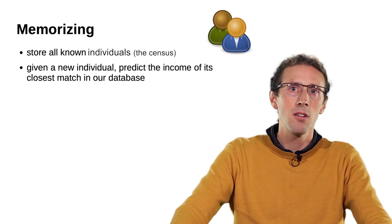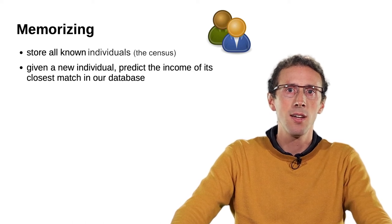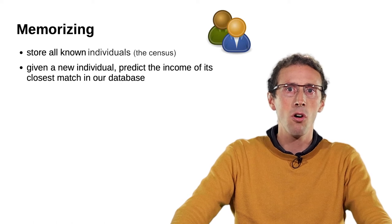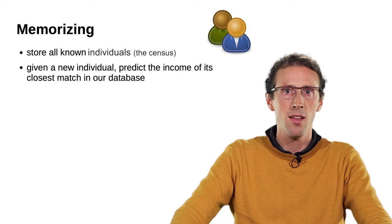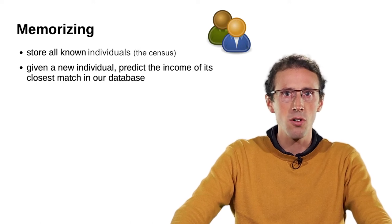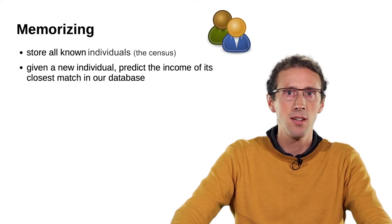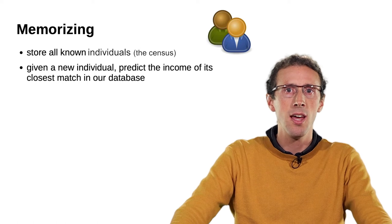One possibility for prediction is to memorize the whole available data. Given the problem of predicting income, we can store all known individuals, the census. Then, given a new individual, we predict the income of its closest match in our database. This strategy is known in machine learning as a nearest neighbor predictor.